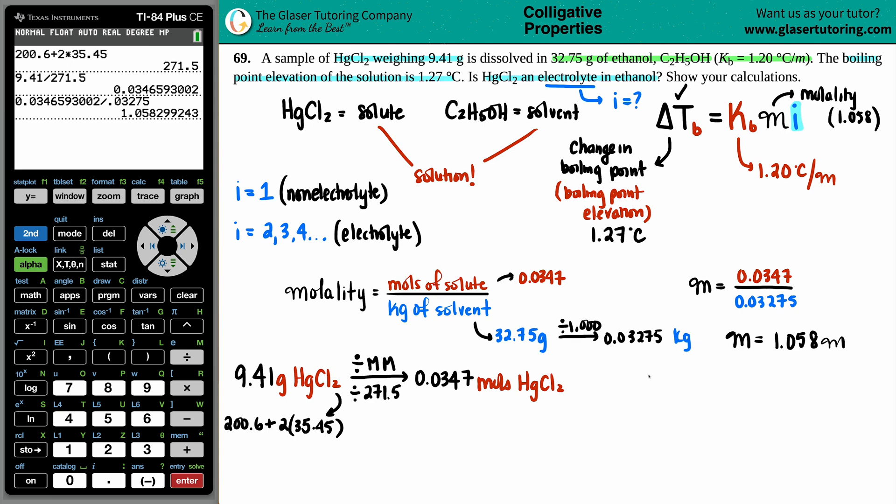So, let's find it out. Delta Tb 1.27 equals the 1.20 times the molality, which is 1.058, and then we're just solving for that I value. So, I can just simplify the right side. I'm going to take this molality and times it by 1.20. And I get 1.27 equals 1.26995. So, maybe we'll just cut it off like that.